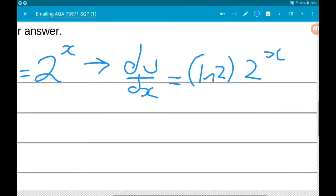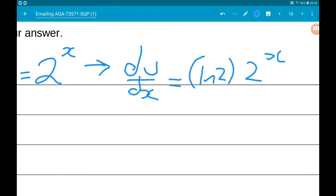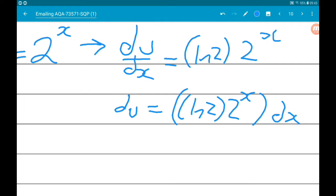Now from this, we can find what dx is with respect to du and u itself. So we can get du is log 2 times 2^x times dx. Therefore, dx is du over log 2 times 2 to the power x.